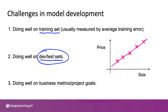Unfortunately, for many problems, having high test accuracy is not sufficient for achieving the goals of the project. This has led to a lot of frustration and disagreements between the machine learning team — which is very good at optimizing test accuracy — and business teams, which care more about business metrics or other project goals.